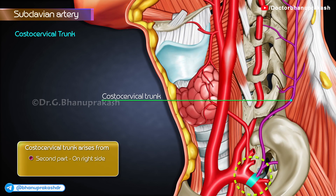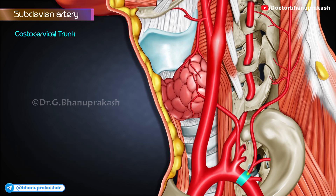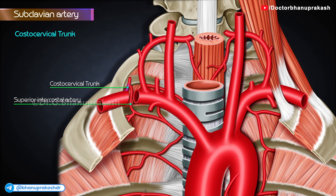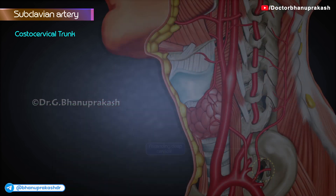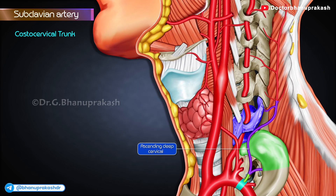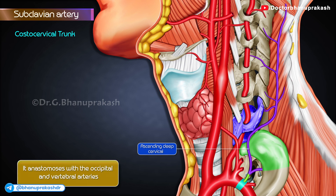Costocervical trunk. The costocervical trunk arises from the posterior surface of the second part of the subclavian artery on the right side, but from the first part of the artery on the left side. It arches backwards over the cervical pleura and divides into the descending superior intercostal and ascending deep cervical arteries at the neck of the first rib. The superior intercostal artery descends in front of the neck of the first rib and divides into the first and second posterior intercostal arteries. The deep cervical artery is analogous to the posterior branch of a posterior intercostal artery. It passes backwards between the transverse process of the seventh cervical vertebra and the neck of the first rib, then ascends between the semispinalis capitis and cervicis up to the axis vertebra. It anastomoses with the occipital and vertebral arteries.